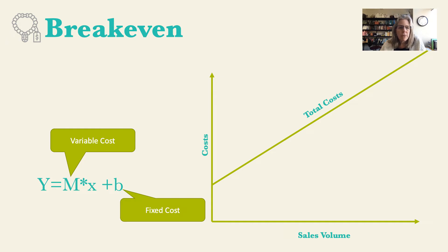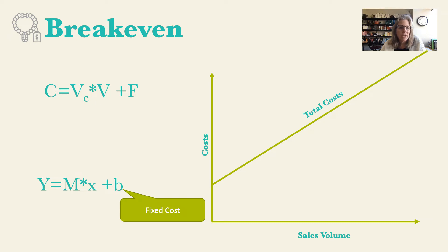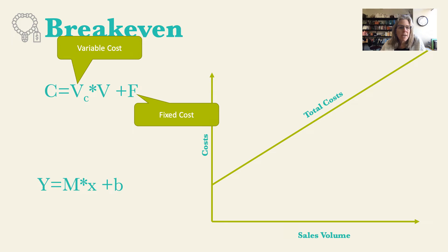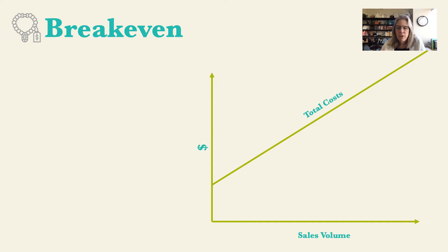In this video I'm going to rearrange these slightly. It's the same equation, but now cost is equal to the variable cost per unit times the volume plus the fixed cost. So variable cost and fixed cost are just the relabeled equivalents.